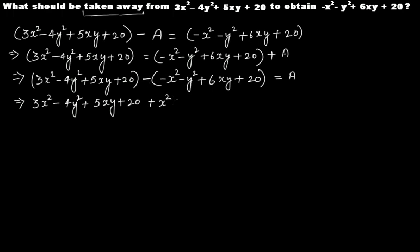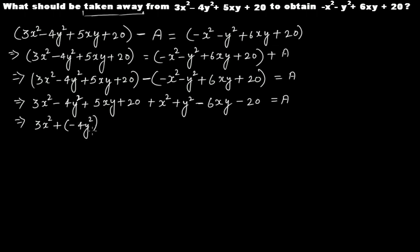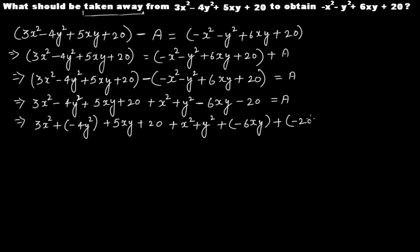So A equals 3x squared minus 4y squared plus 5xy plus 20, minus the quantity minus x squared minus y squared plus 6xy plus 20. Now open the bracket: outside is minus, inside minus gives plus x squared; outside minus, inside minus gives plus y squared; outside minus, inside plus gives minus 6xy; outside minus, inside plus gives minus 20.